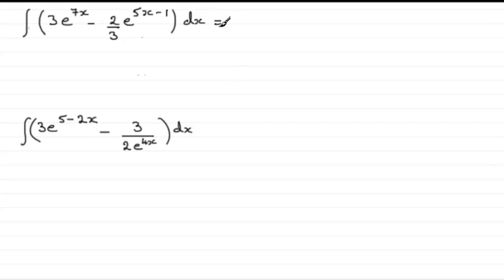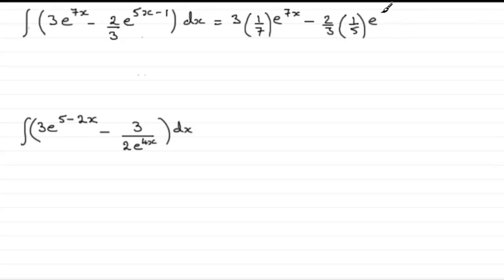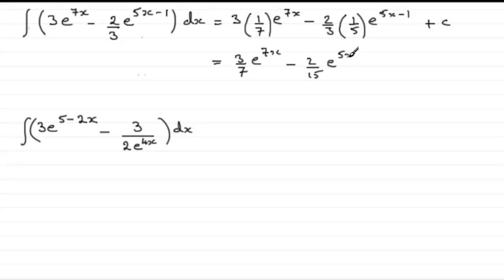For the first problem, we have 3 multiplied by one-seventh e to the power 7x — we bring the 7 down as one-seventh. For the next term, it's minus two-thirds, and we take the a value of 5 to get two-thirds multiplied by one-fifth, times e to the power 5x minus 1, plus c. Tidying up: three-sevenths e to the power 7x minus two-fifteenths e to the power 5x minus 1, plus c.